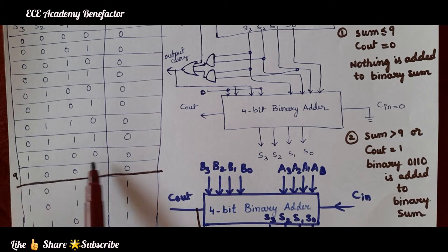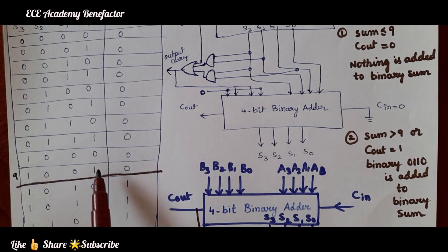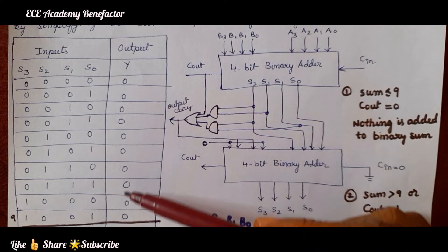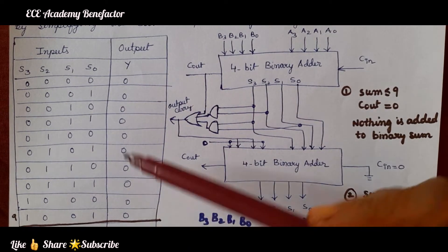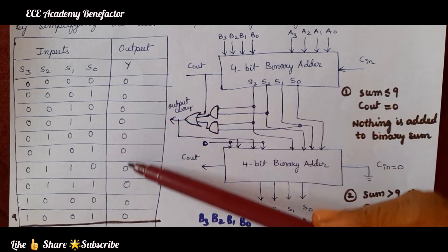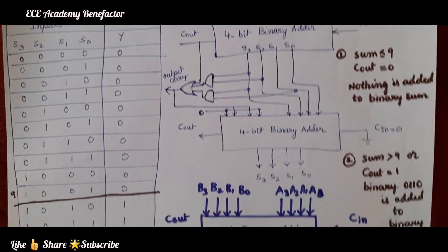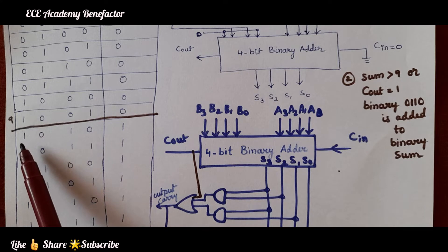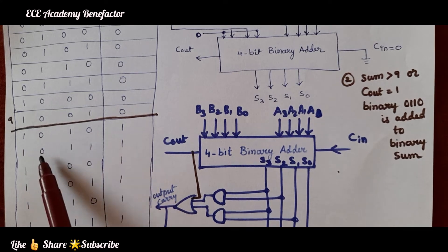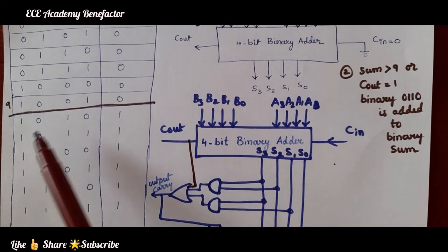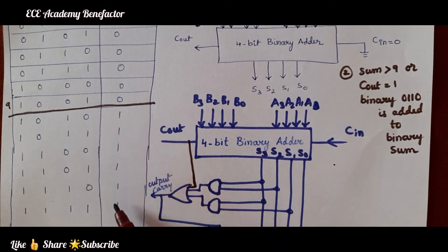When the sum is equal to or less than 9, the Y output column is all 0. So when the sum is varying from 0 to 9, the output column is 0. Now when the sum is greater than 9 — that is, 1010, 1011, 1100, 1101, 1110, 1111 — the output Y becomes 1.